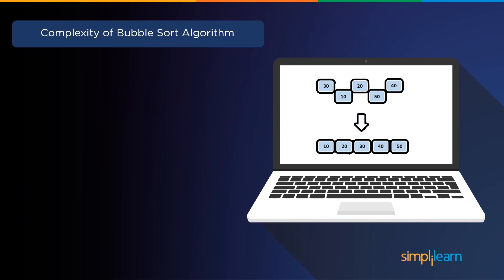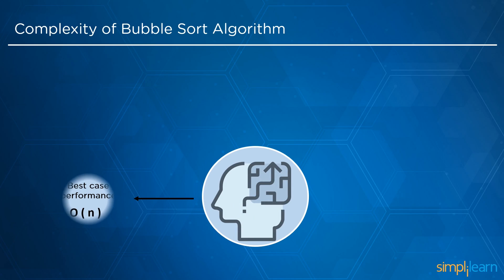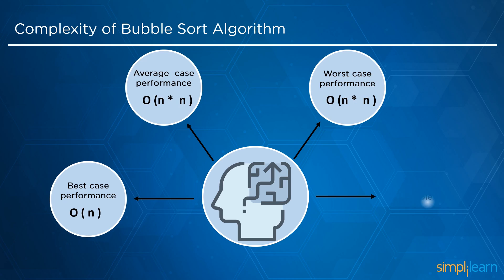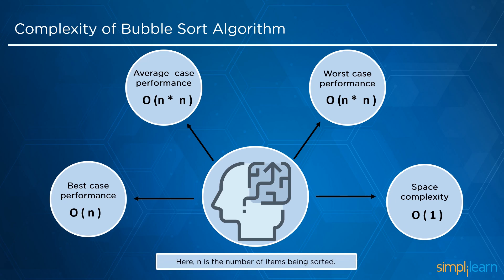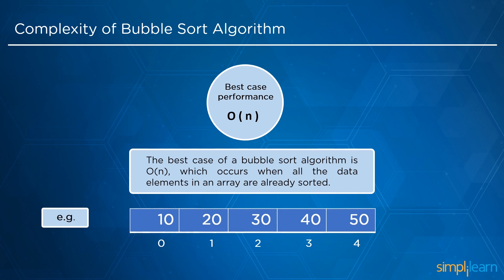Now we will see the complexity of the bubble sort algorithm. The best case is O(n), where n is the number of elements being sorted. The worst and average cases are O(n²), that is n into n. The space complexity of the bubble sort algorithm is O(1), because only one additional temporary variable is required.